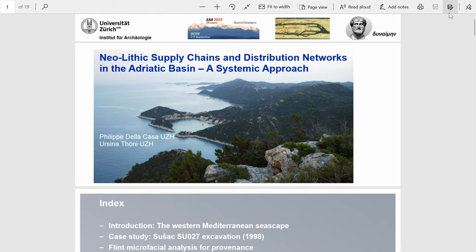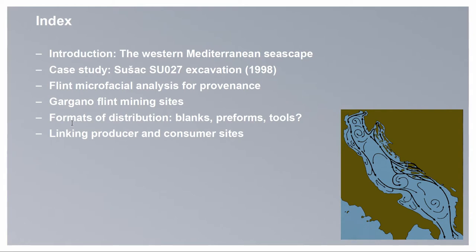I want to talk about the distribution networks of flint in the Adriatic Basin, starting from a case study from a couple of years ago on the small crescent island of Suchatz, where material collected there turned out to have specific importance for the aspect of flint circulation in the Adriatic Basin.